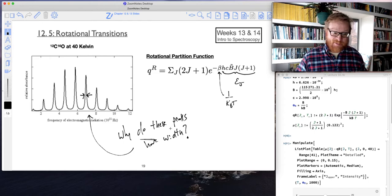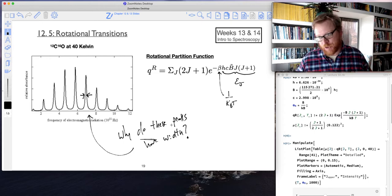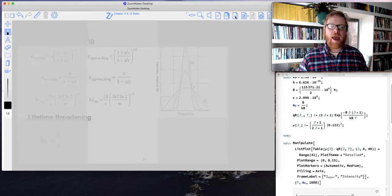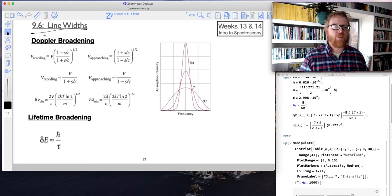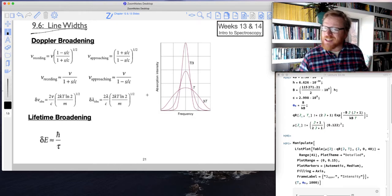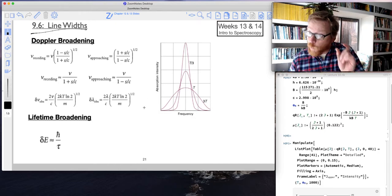Well, as you might guess, it has to do with the temperature. And more formally, this is what we call line widths. So this is section 9.6. There's two main effects contributing to why spectra actually have width.